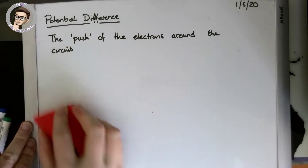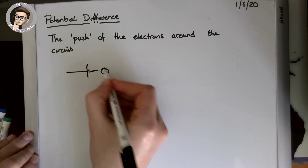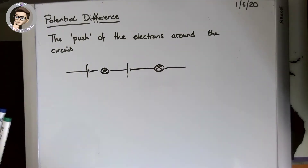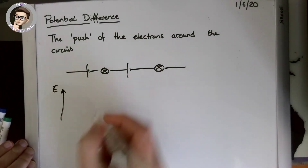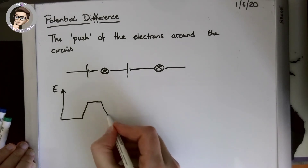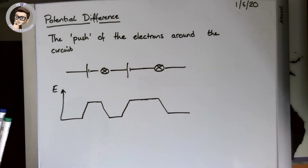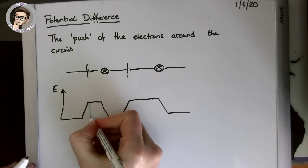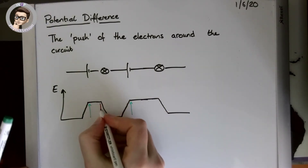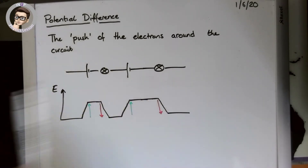Let's do another one with alternating cells and bulbs: cell, bulb, cell, bulb. The energy increases at the first cell, decreases at the first bulb, increases again at the second cell, and decreases at the second bulb. So we've got two points where we're gaining potential difference and two points where we're losing potential difference. This relies on those cells being equal and those bulbs being equal — otherwise things look a little different.